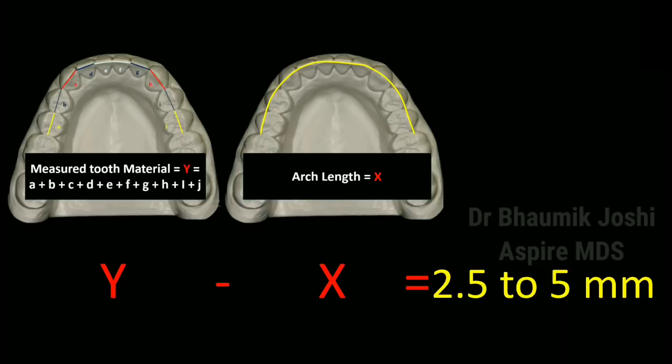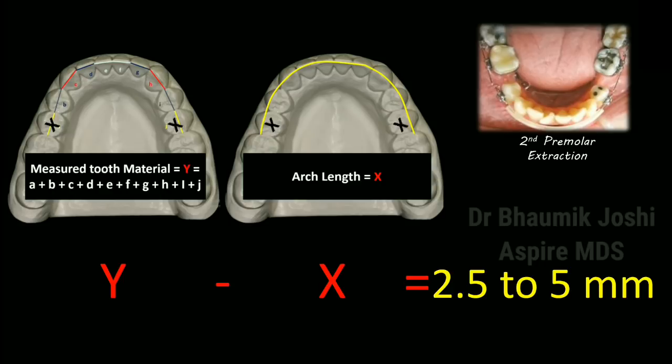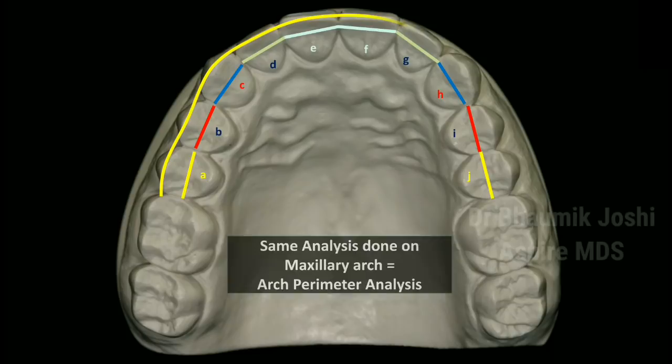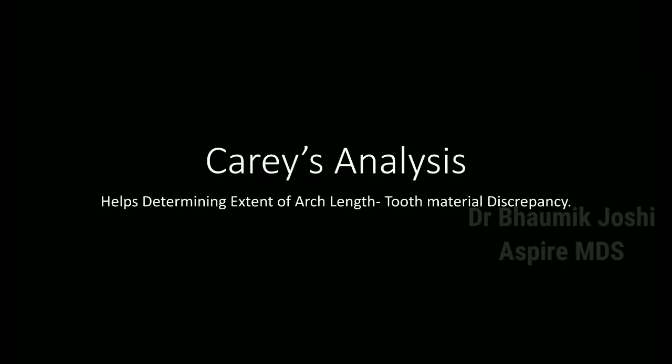If the value is from 2.5 to 5 millimeters, there is moderate discrepancy and it can be corrected using extraction of the second premolars. If the value is more than 5 millimeters, it has to be corrected by extraction of the first premolars. If the same analysis is done on the maxillary arch, it is called arch perimeter analysis. That's how Keris analysis helps us determine the extent of arch length to tooth material discrepancy and what treatment has to be done.